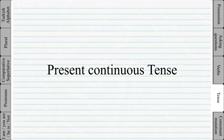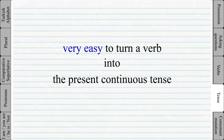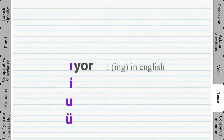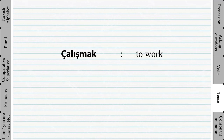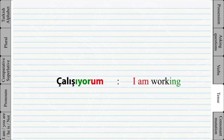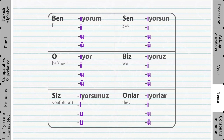Present continuous tense: it is very easy to turn a verb into the present continuous form. The -iyor is like the '-ing' in English — simply add -iyor after the verb root and then add the personal ending. For example, 'çalışmak' (to work) — remove the -mak to get the verb root, then add -iyor and the personal ending. The only thing that changes is the vowel in front of -iyor; the -iyor itself is not affected by the vowel harmony rules.